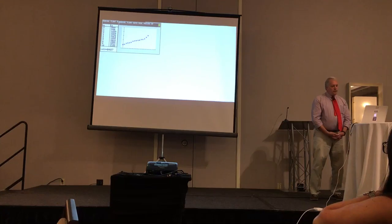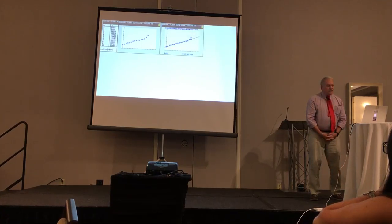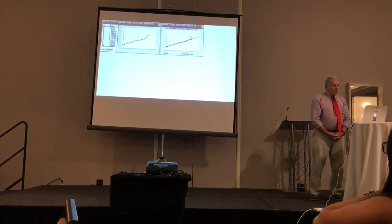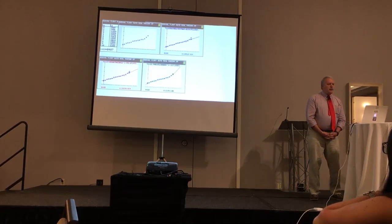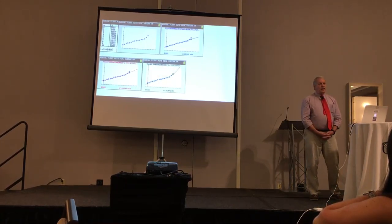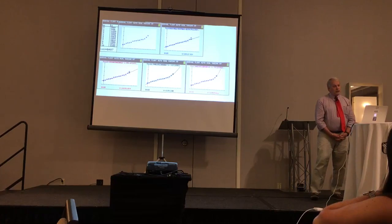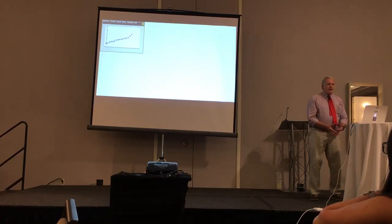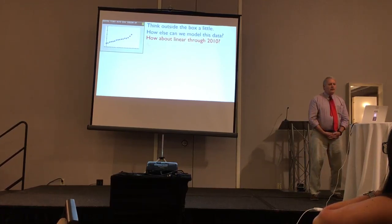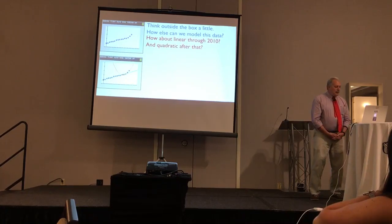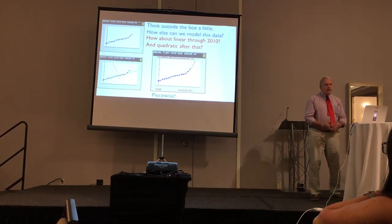So I put it in the calculator. First we tried the linear — it wasn't too bad. Then the quadratic, and surprisingly it was a little bit better. But we never expected the cubic to do so well, until I looked at the coordinate, which was really good. But I'd like you to think outside the box — how else can we model the data? One student came up with the idea of using a linear for part of it and a quadratic for the end. So we tried that and put it into a piecewise function, and there we go.